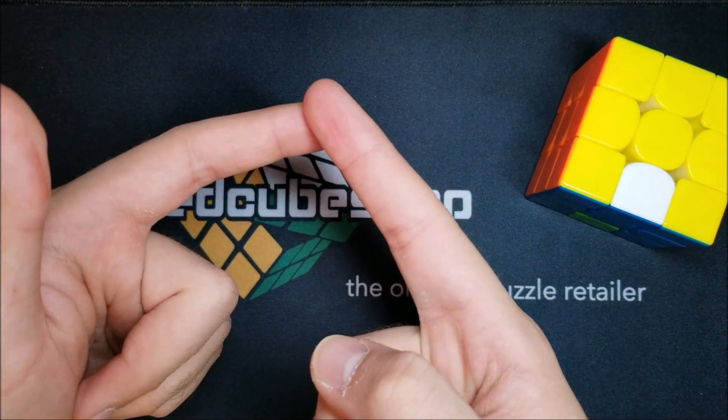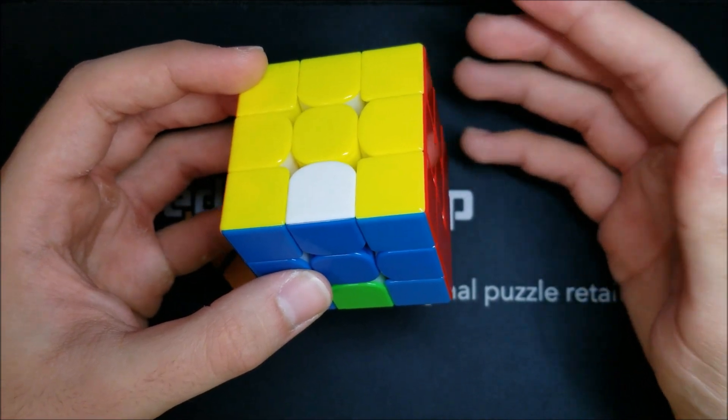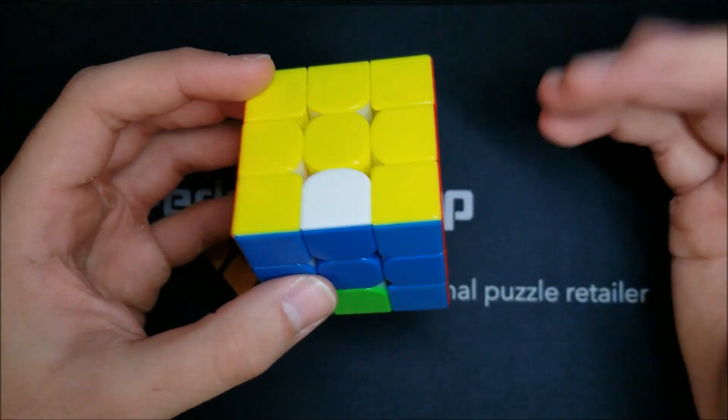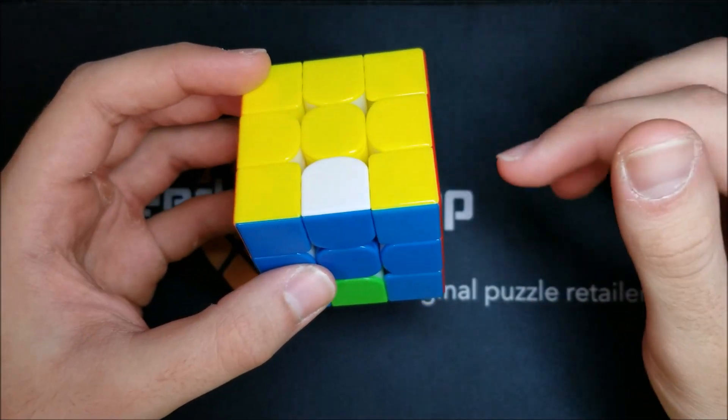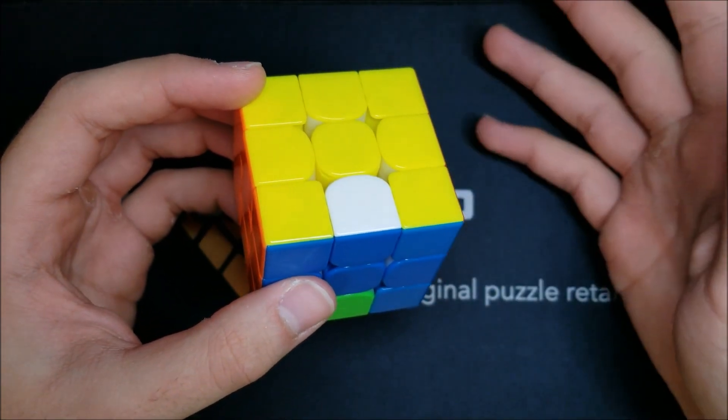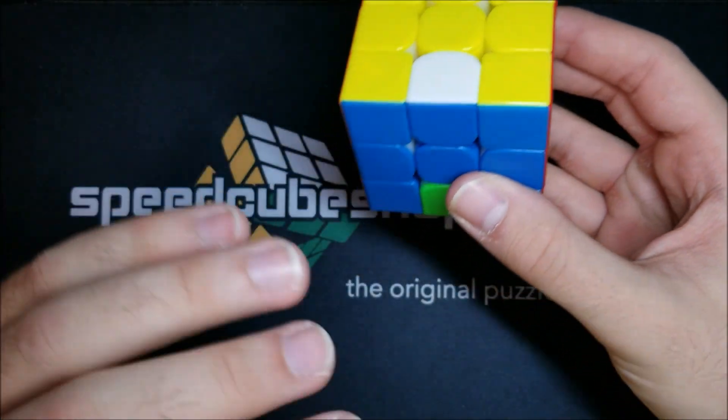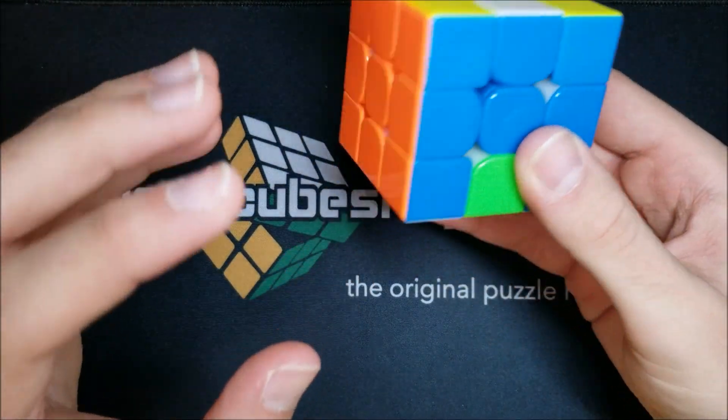But the way I like to practice this specifically and kind of program it into my practicing is before I actually start my 3x3 session, I like to do about 50 solves of one, only one of these variants. So say for a week I'll pick, okay, I'm gonna do first block plus second block square blindfolded.